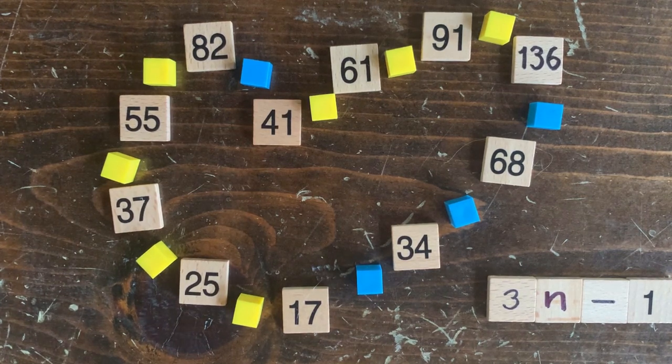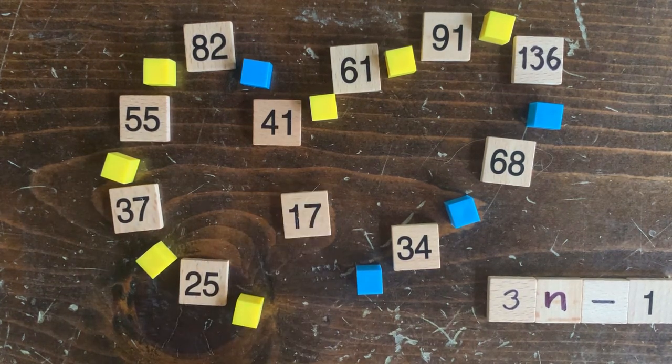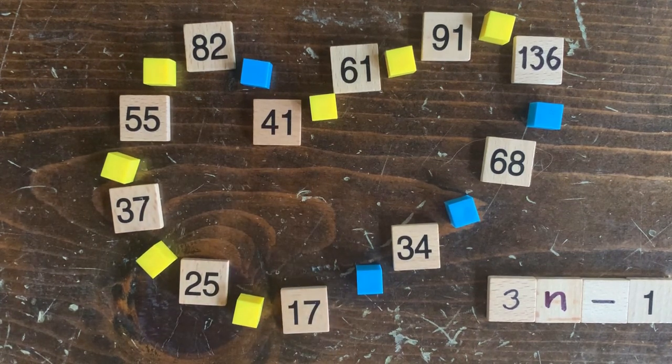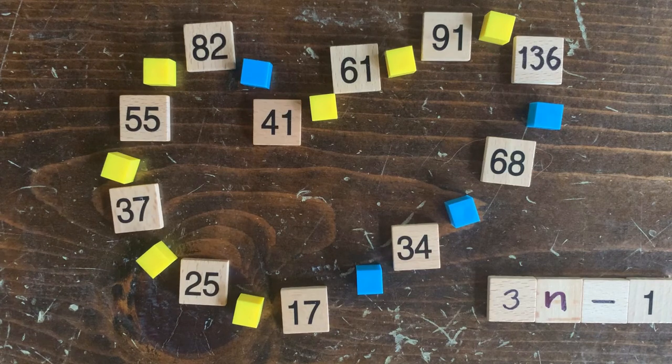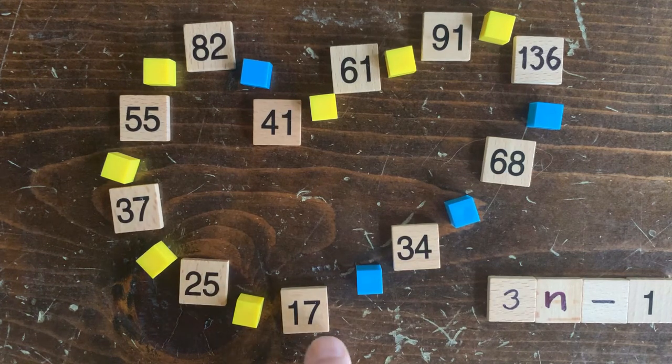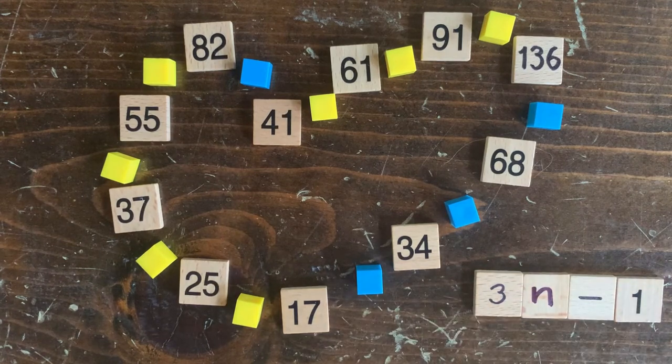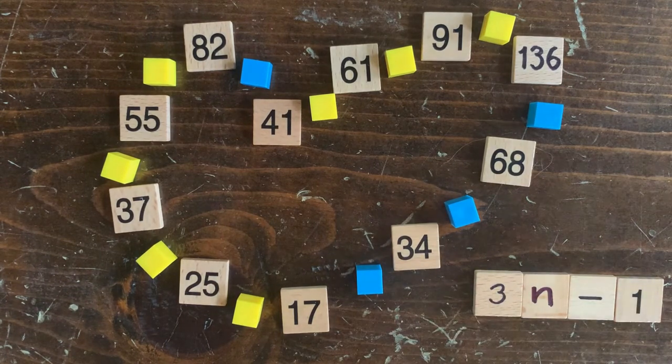Hey, welcome back to the 3n plus 1 problem. This is episode 17, which reminds me of moving from the south to the north when I was 17. It also reminds me of the 3n minus 1 loop we found in an earlier episode, where the bottom number of that loop was 17.